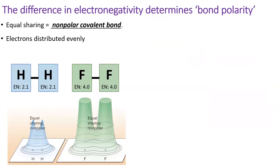When elements with the same electronegativity share electrons, they share them evenly, and this is called a nonpolar covalent bond. The electrons in a nonpolar covalent bond are distributed evenly around both atoms in the bond, as demonstrated here for H2 and F2.